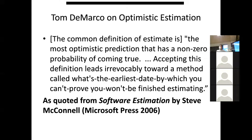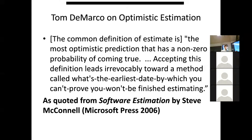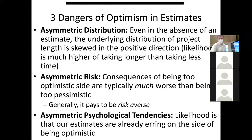Steve McConnell notes that the most common definition of 'estimate' in software is: the most optimistic prediction that has a non-zero probability of coming true. The problem is that this leads irrevocably toward what's called 'the earliest date on which you can't prove you won't be finished.' This leads to systematic underestimation and projects that are actually technical successes being judged as failures — sometimes even cancelled — simply because the estimate was wrong.